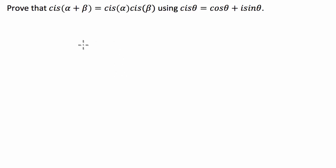G'day guys, we've got a trigonometric identity proof today where we're asked to prove that cis(α + β) equals cis(α) times cis(β) using another trigonometric identity which is that cis(θ) equals cos(θ) plus i·sin(θ). Using this, we have to prove this.